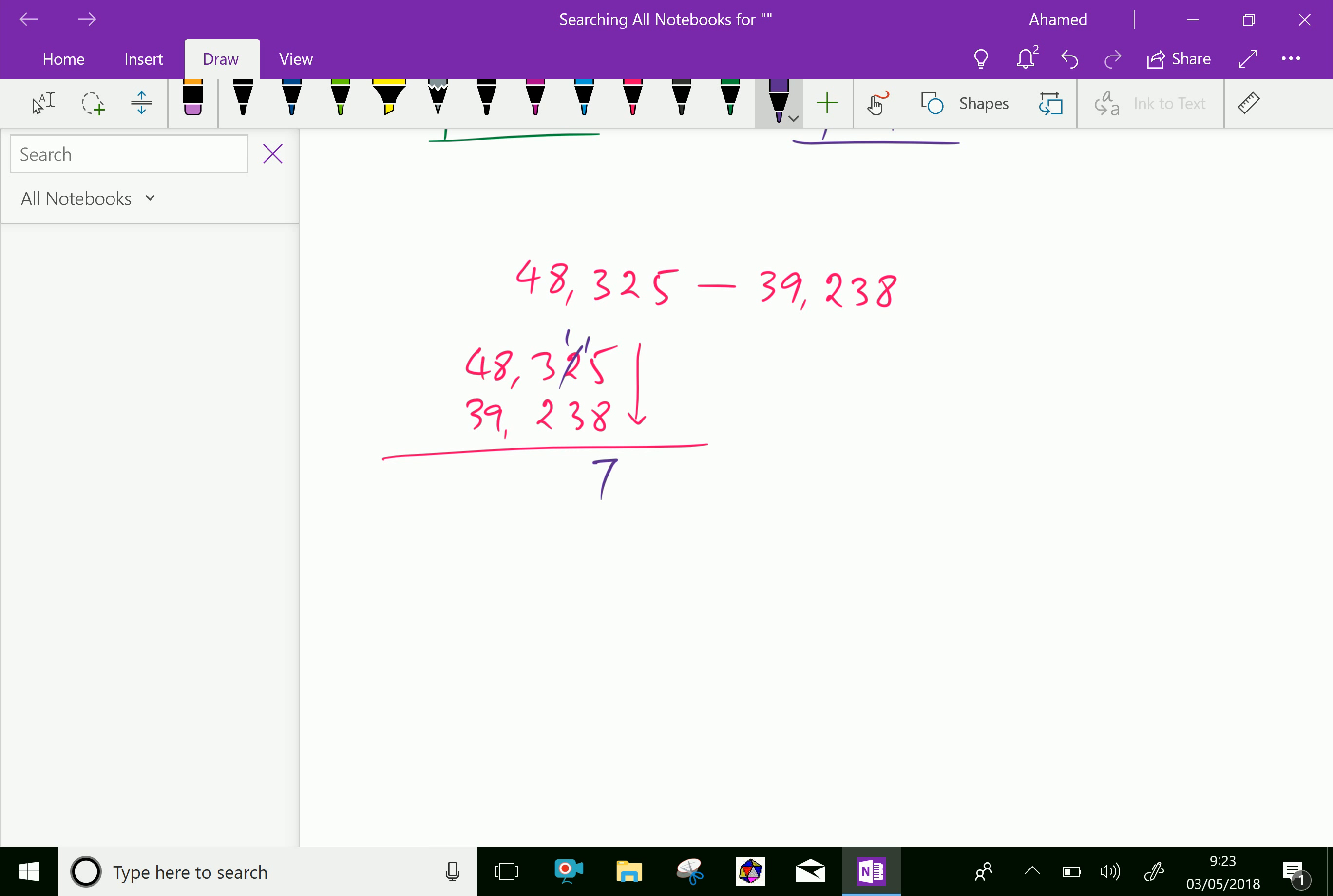Now it becomes 1 here. Borrow from the next neighbor, it becomes 2, and this becomes 11. 11 minus 3 is 8. Then 2 minus 2 is 0. 8 minus 9 is not possible, so borrow 1 from the next neighbor. It becomes 18, and 18 minus 9 is 9.